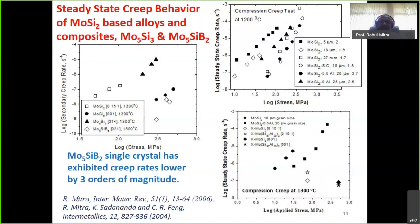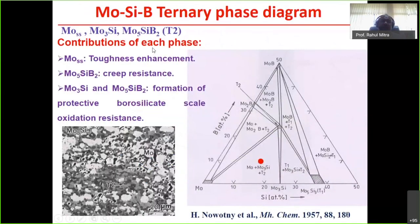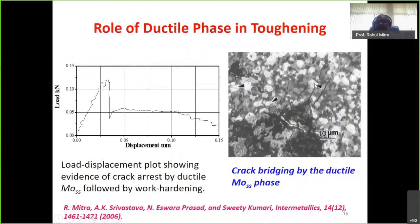These materials are suitable for high-temperature applications but not for structural applications because of room-temperature fracture toughness. The way forward is to use multi-component — at least ternary — alloys: molybdenum-silicon-boron alloys with three phases: molybdenum solid solution, Mo3Si, and Mo5SiB2. Molybdenum solid solution contributes to toughness, Mo5SiB2 contributes to creep resistance, and together with Mo3Si, Mo5SiB2 also aids formation of a protective borosilicate scale providing oxidation resistance. This is the partial ternary phase diagram of Mo-B-Si showing the relevant composition field.